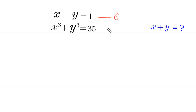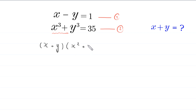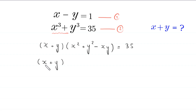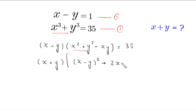Let's call this equation 1 and this equation 2. From equation 2, x cubed plus y cubed can be factorized as x plus y times x squared plus y squared minus xy, which is equal to 35. Next, x plus y times x squared plus y squared can be written as x minus y whole squared plus 2xy, minus xy, equal to 35.